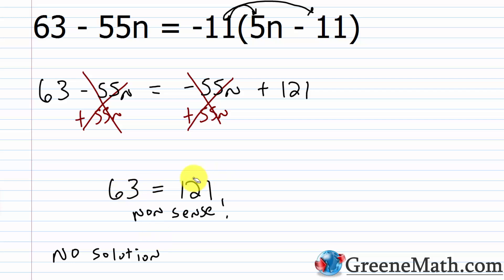If you end up with your variable disappearing and one side doesn't equal the other, you have a contradiction — there's no solution.